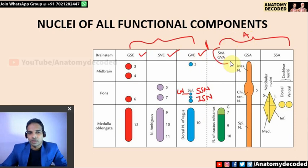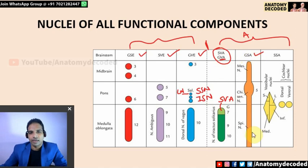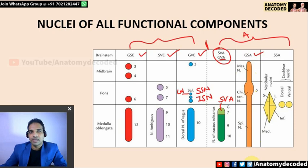For the afferent columns, special visceral afferent and general visceral afferent share a common nucleus called the nucleus of tractus solitarius. The cranial-most part of this nucleus receives special sensations — taste sensations via SVA — while the remaining part receives general visceral afferent input, that is pain, touch, and temperature from the viscera. For general somatic afferent, the trigeminal nerve is the major carrier. The trigeminal nucleus is the largest of all cranial nerve nuclei, occupying the midbrain, pons, medulla oblongata, and extending into the spinal cord.